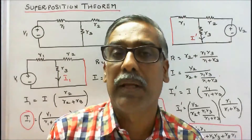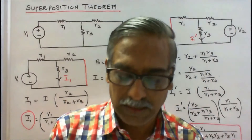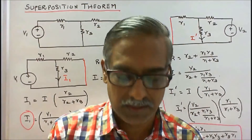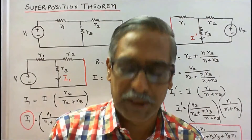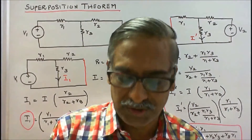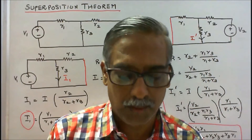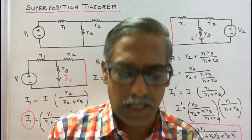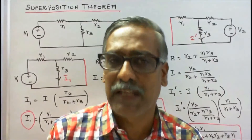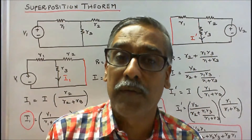What is meant by theorem? A theorem is a result that can be proven to be true from a set of axioms. The term is especially used in mathematics where the axioms are those of mathematical logic and the system in question. What is meant by axiom? An axiom is a statement which is regarded as being established, accepted, or self-evidently true.